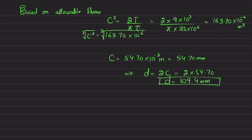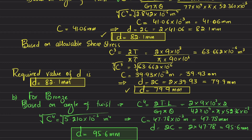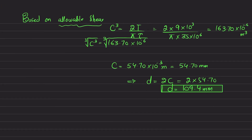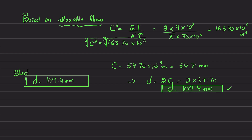Comparing the two values: 95.6 mm based on angle of twist and 109.4 mm based on allowable shearing stress. The required diameter for the bronze shaft is selected as D = 109.4 mm, the larger and therefore safer value.